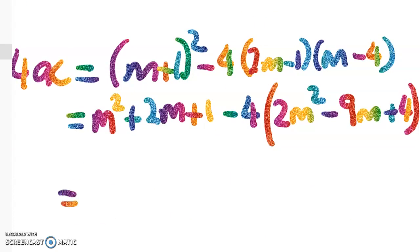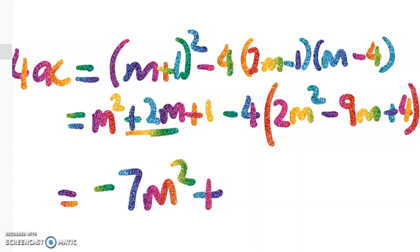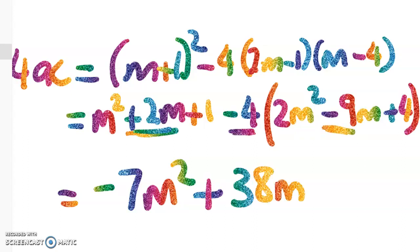Cleaning that up gives me negative 7m squared, then plus 2m and plus 36m here, and then plus 1 minus 16, which gives me minus 15. So we have negative 7m squared plus 38m minus 15.